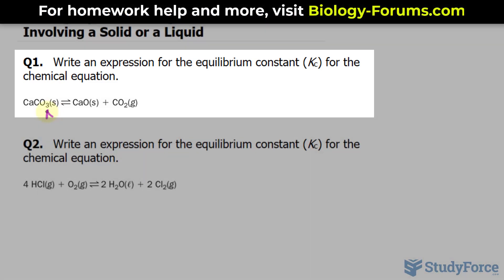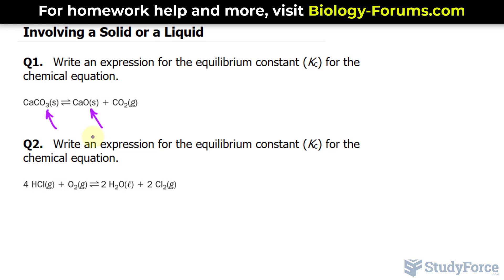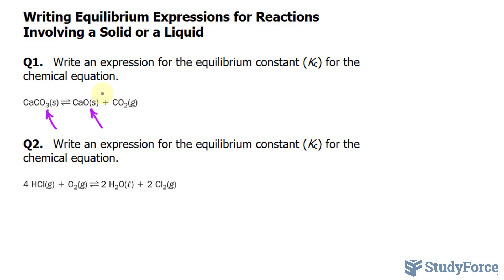Notice that this molecule and this molecule are both solids. And just like how we write equilibrium constants, we relate the products with the reactants. So products over reactants. Since we're ignoring this and this, we can say that Kc is equal to the concentration of CO2.